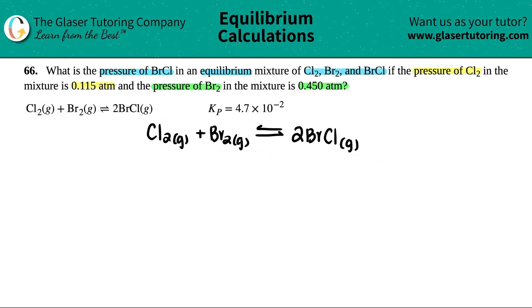Now let's write what they gave us. They told us that the pressure of Cl₂ was 0.115 atm, and they told us that the pressure of Br₂ was 0.45 atm.